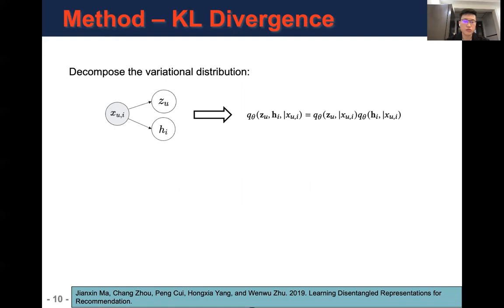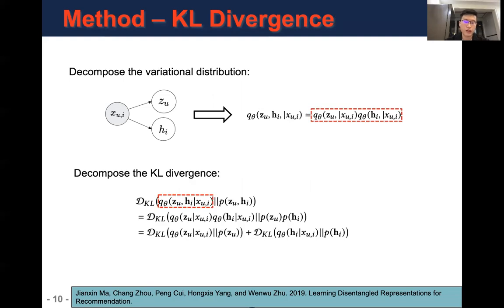According to the common factorization rule of graphical models, we can further decompose the variational distribution Q theta into the following form. And then, we can decompose KL divergence terms by using the decomposed variational distribution. In the KL term, if the prior is factorized, by penalizing the KL divergence, we can enforce the user representation theta_u and item representation h_i to be factorized. Specifically, we choose standard multivariate normal distribution as prior.